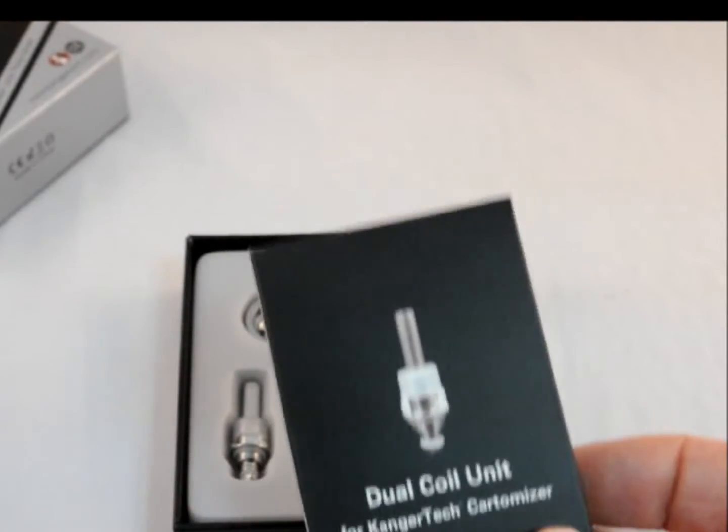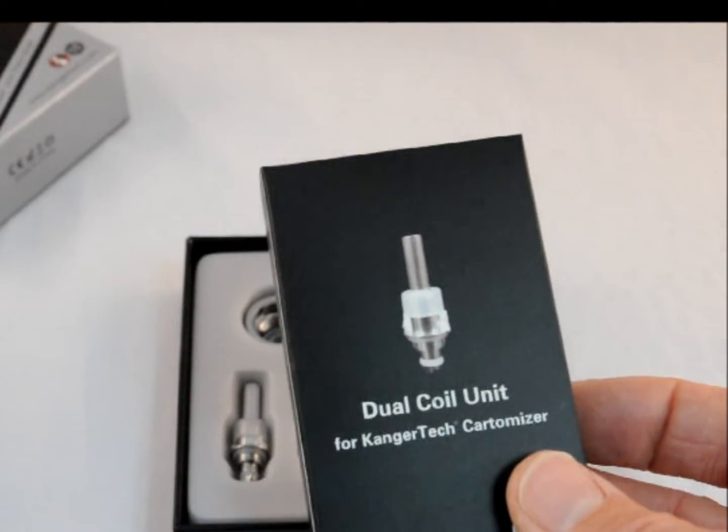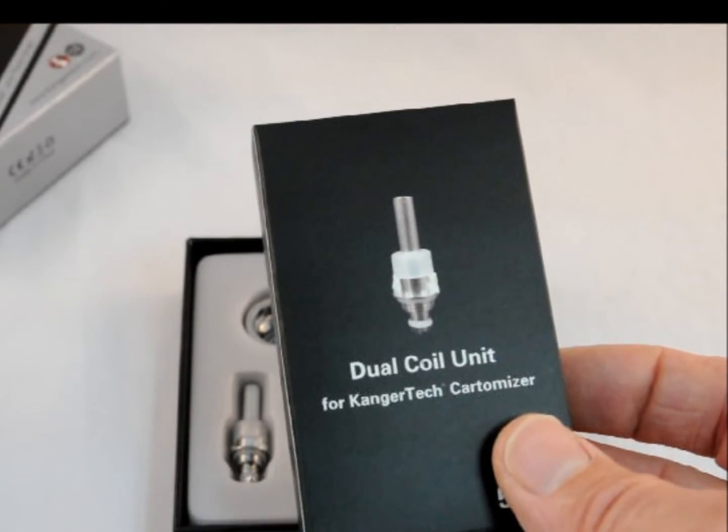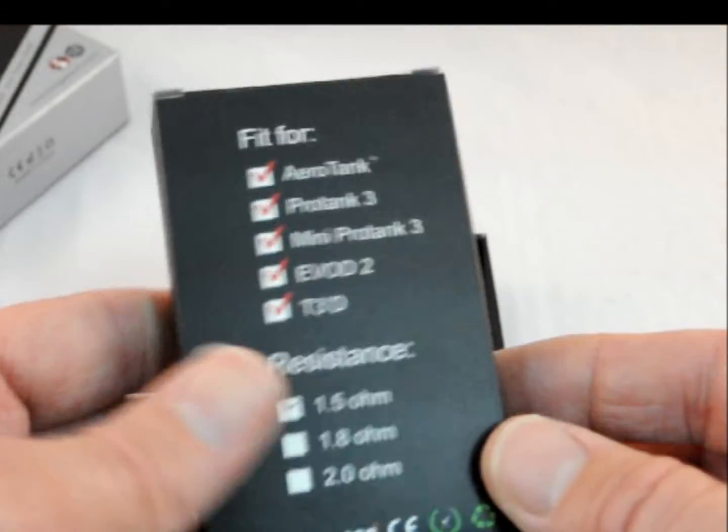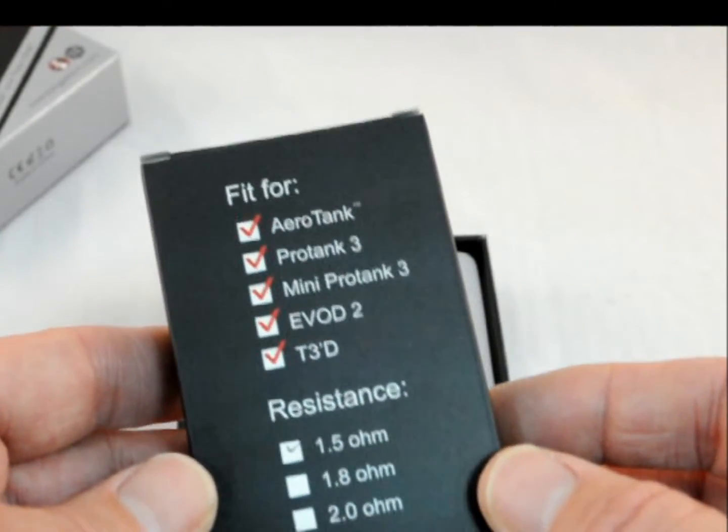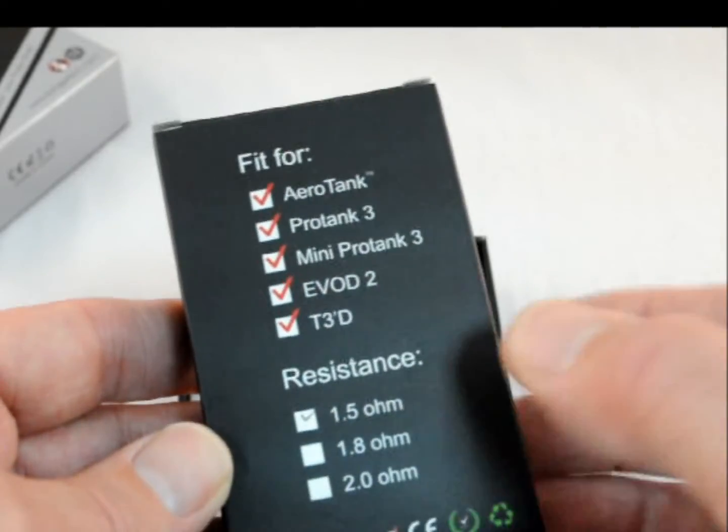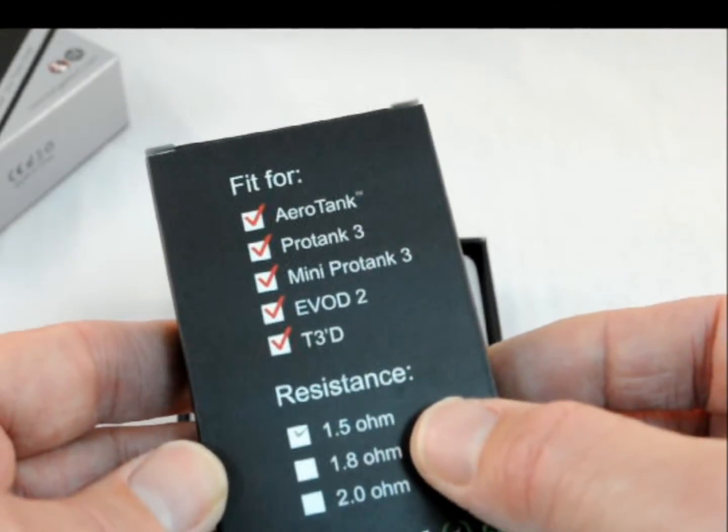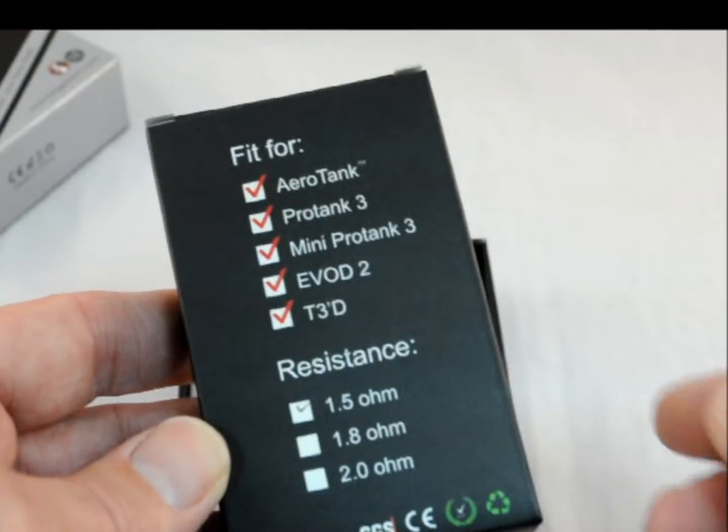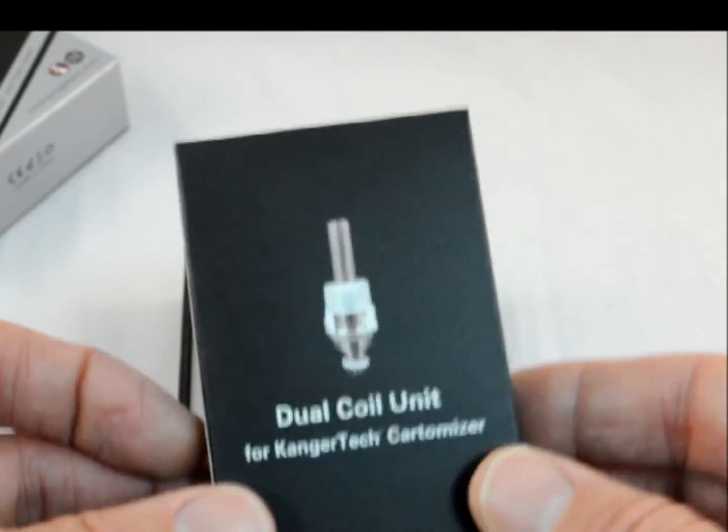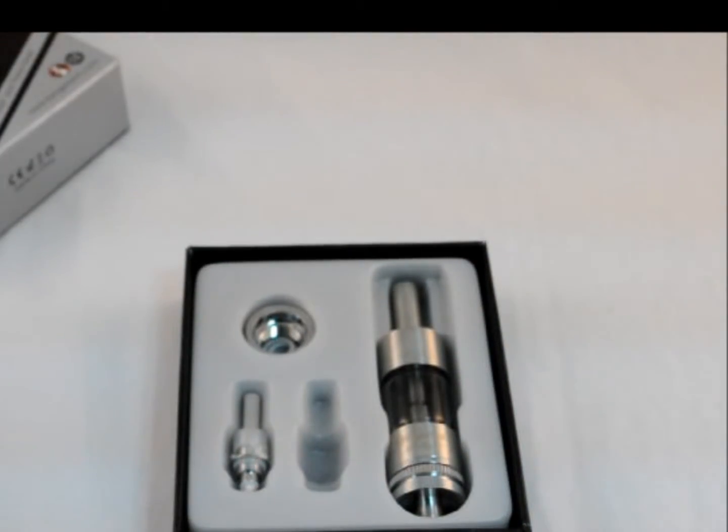And as always, Fort Myers Vapor uses authentic Kanger Tech replacement coils for all of our Kanger products. They're available in 1.5, 1.8, and 2.0 ohms, so you can really dial in the type of vapor you're going to get.